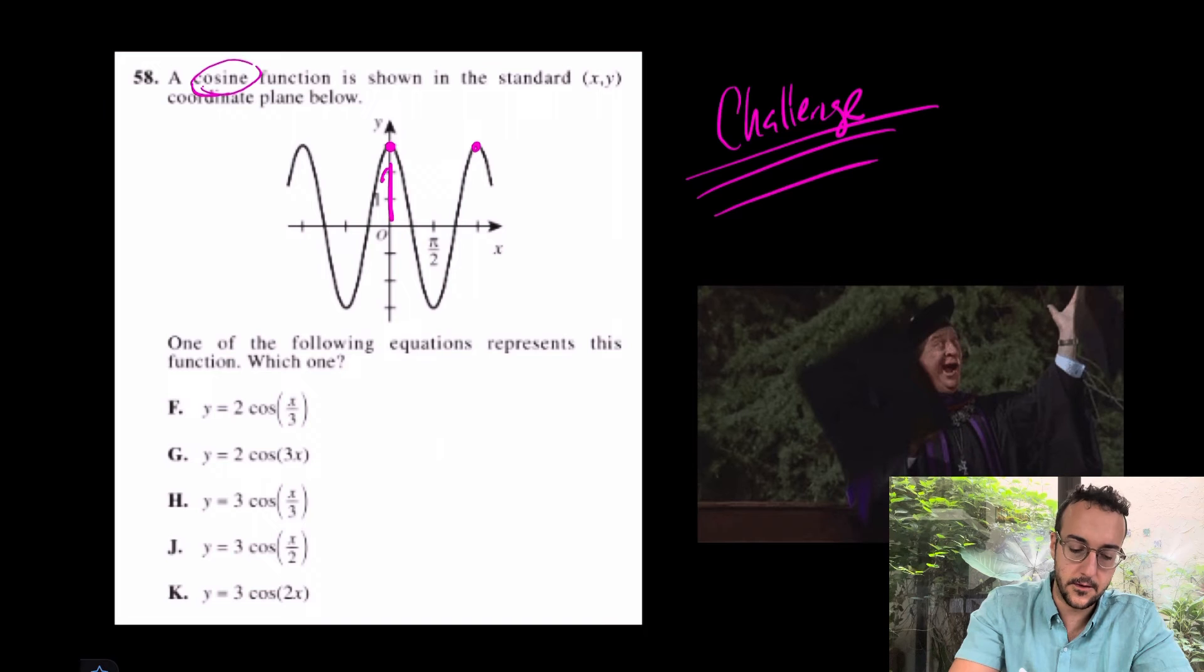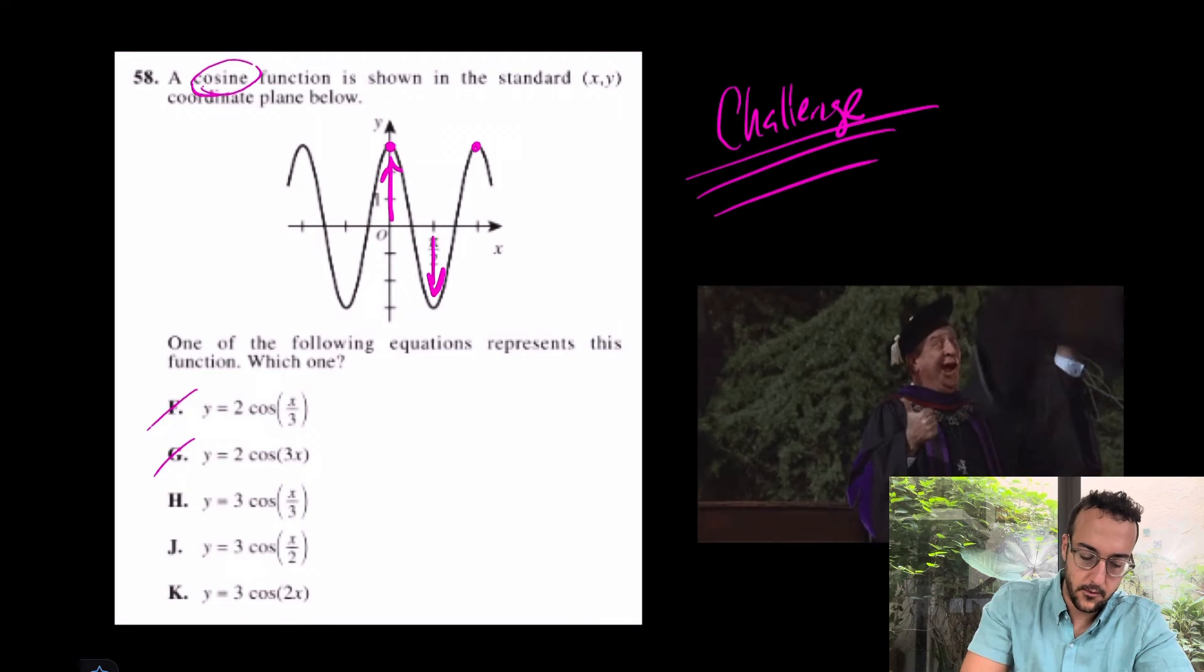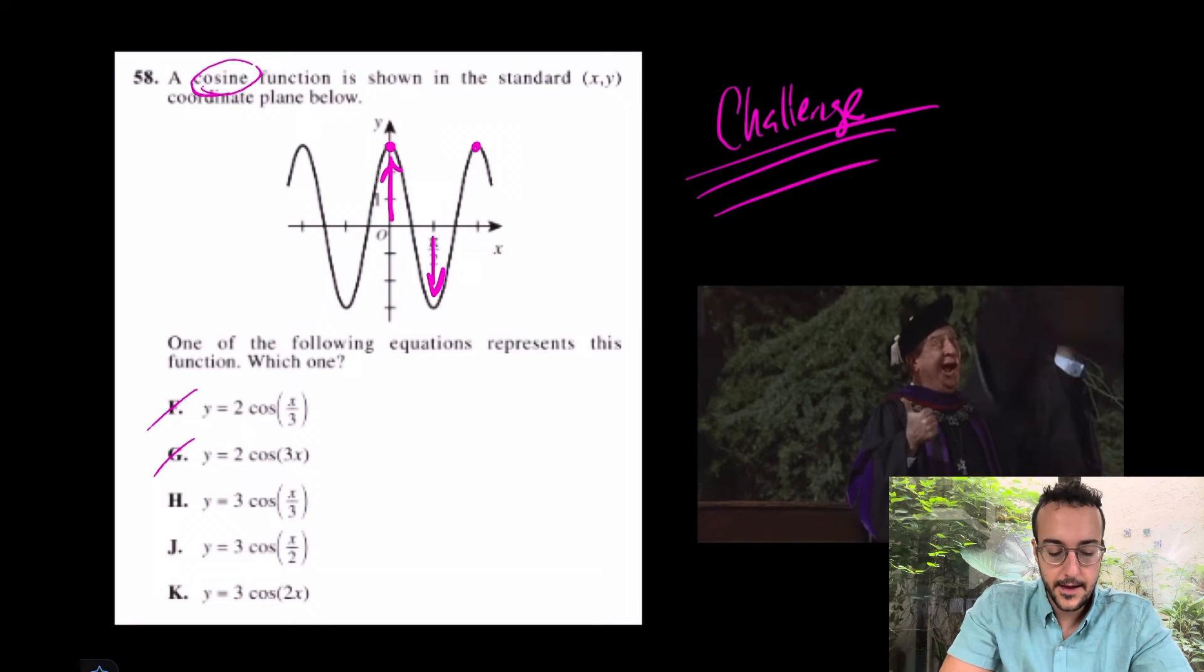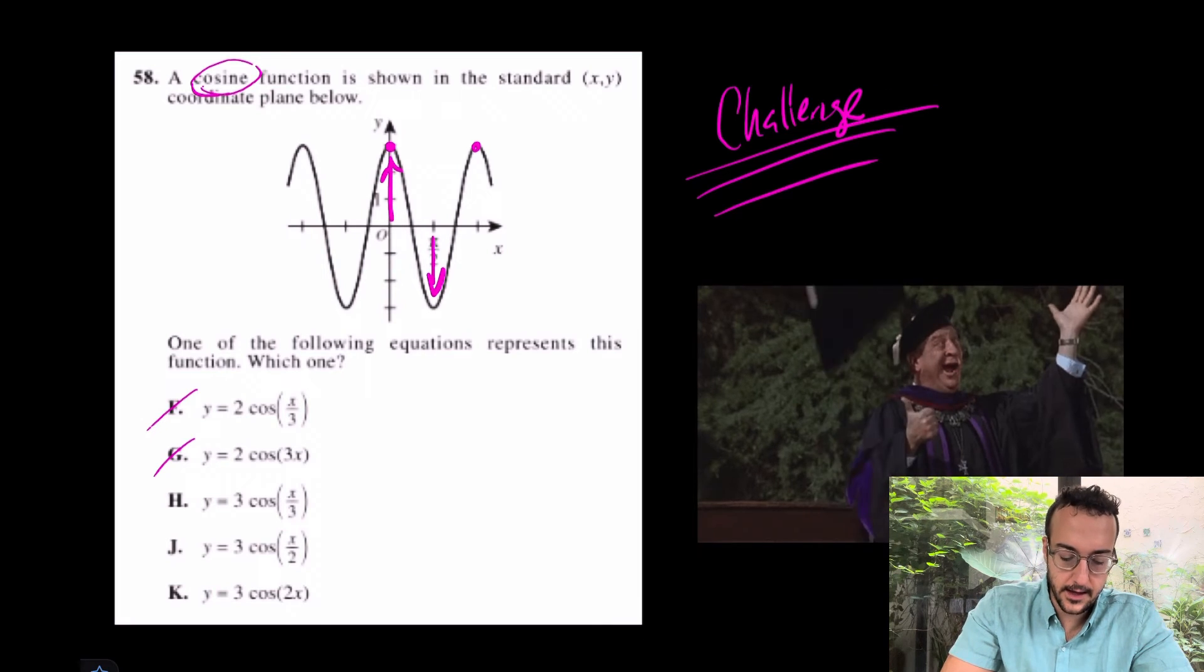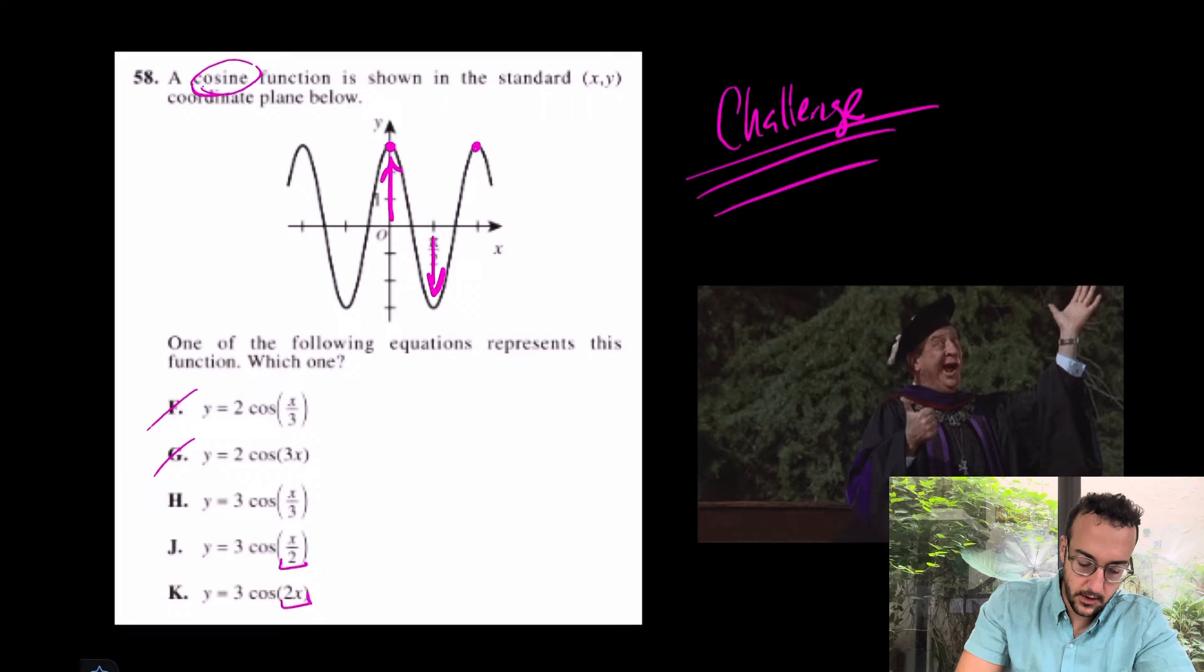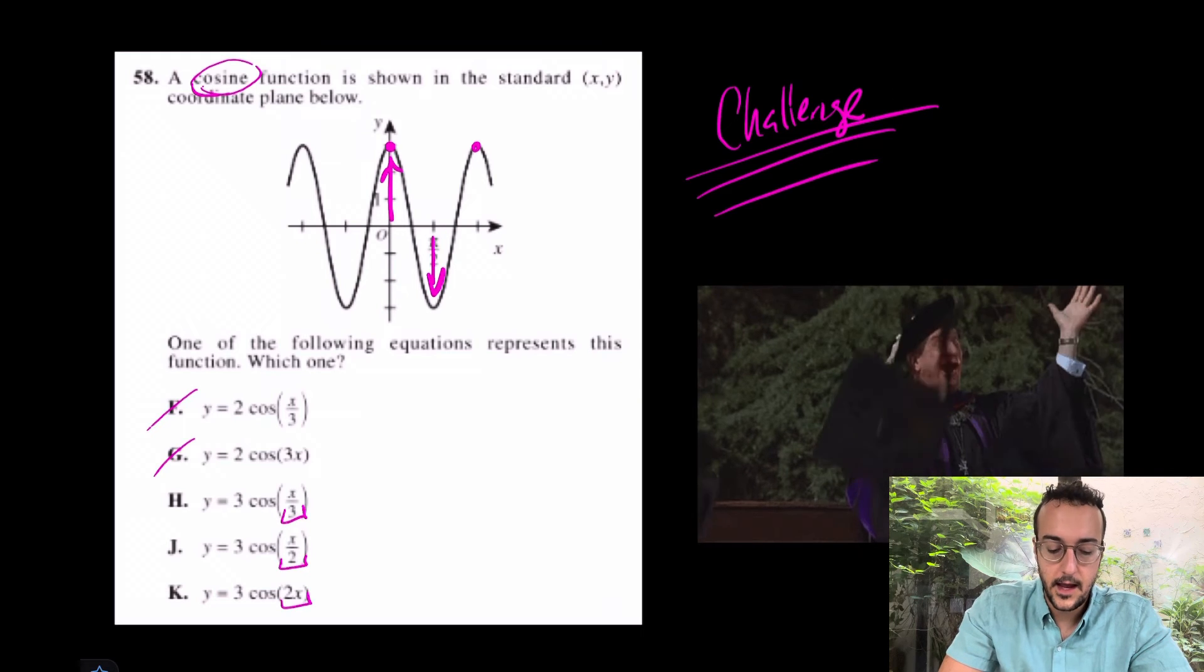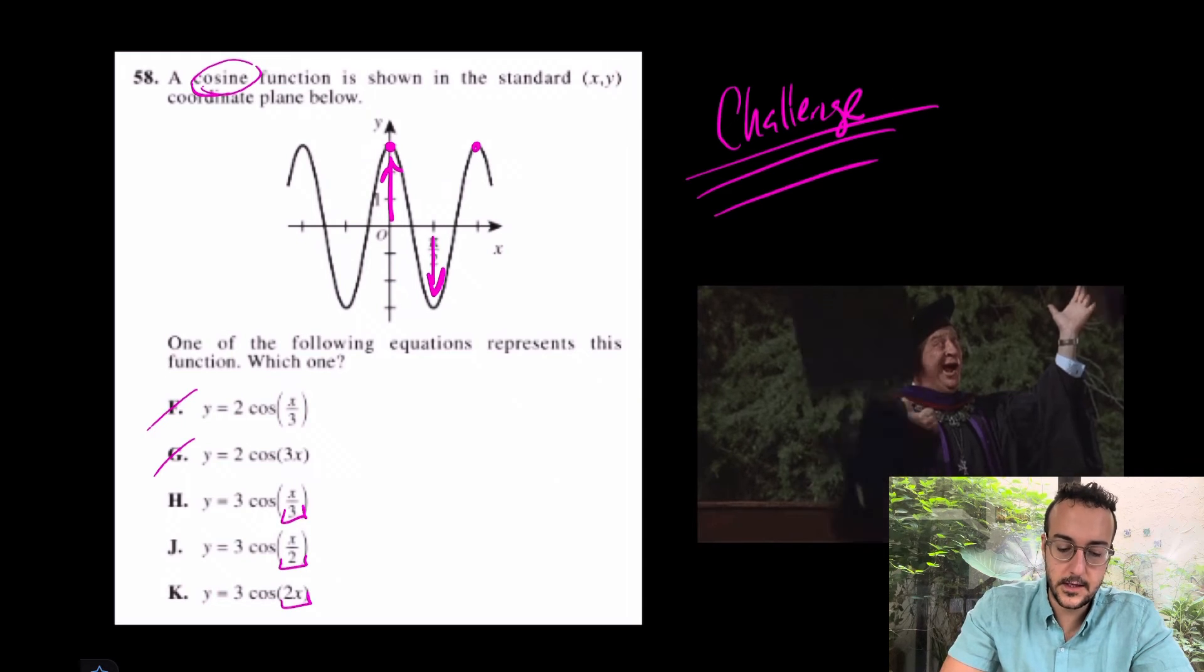The other thing is the amplitude. It looks like it's going up 3 and down 3. Well, F and G are just trash then. In that case, I'm looking at H, J, and K, but the discrepancy between those is that value, the B value controlling the period. In that case, what do you think the answer is here?